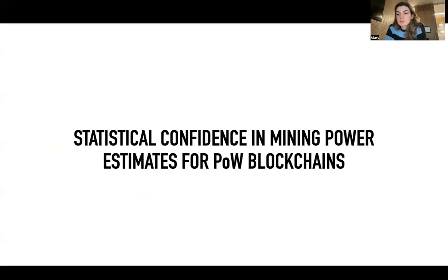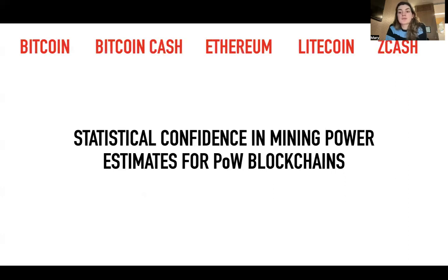In this paper, we'll show you how the existing ways of reporting the Nakamoto coefficient underestimate security risk for five major proof-of-work blockchains, and we'll offer a straightforward solution for addressing statistical uncertainty in mining power estimates.